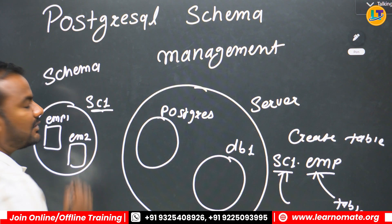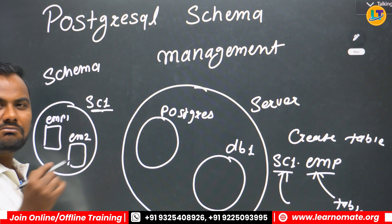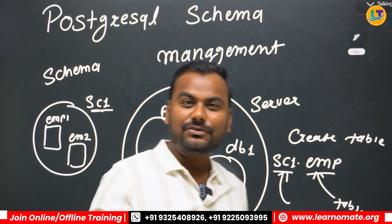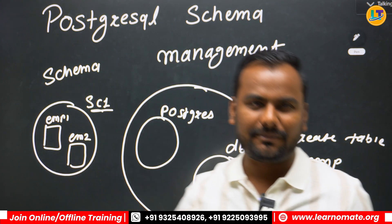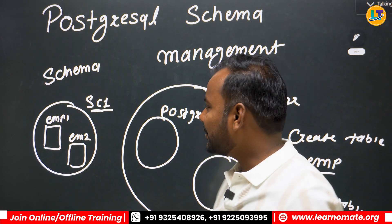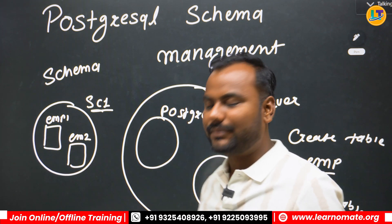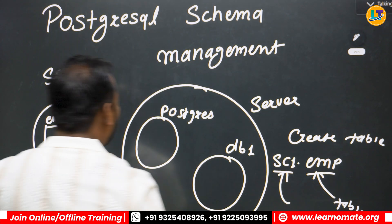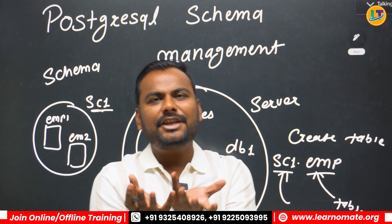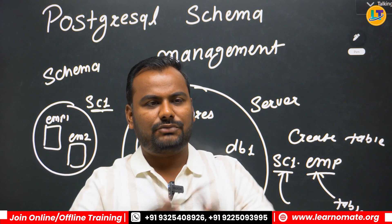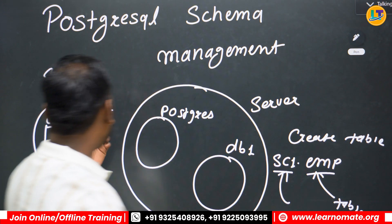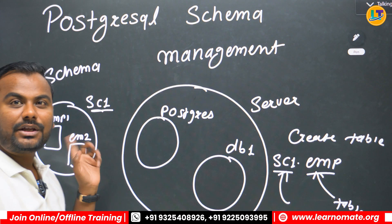A schema can have tables, functions, views, synonyms, and anything else. So schema is a collection of objects — you can have multiple different types of objects under a single schema. This is why schema is also called a namespace.